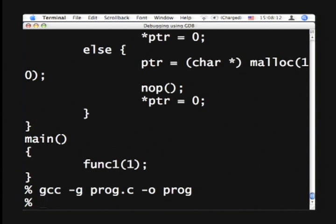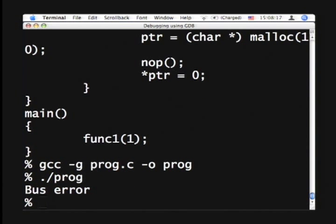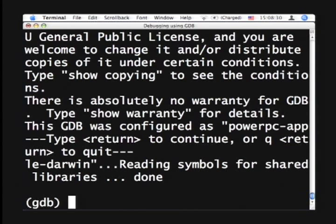So if you go ahead and run this program, you get a bus error, meaning there is a bug. And this happens to be the easiest bug to debug. So let's fire up our debugger GDB for the program, and so now we are inside the debugger.